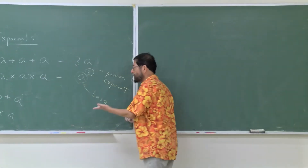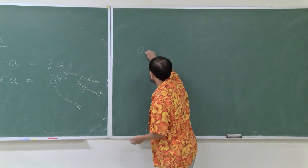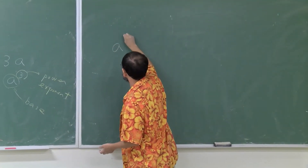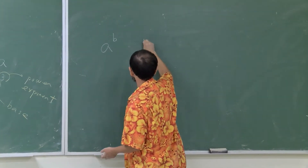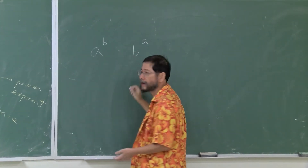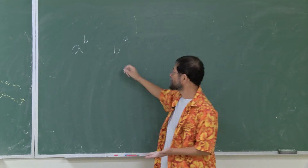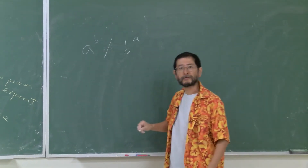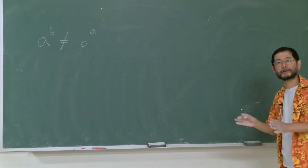But the point is this: going up to exponents, I can switch and ask whether a raised to b equals b raised to a. The important thing is that they are no longer equal — they are not an identity.